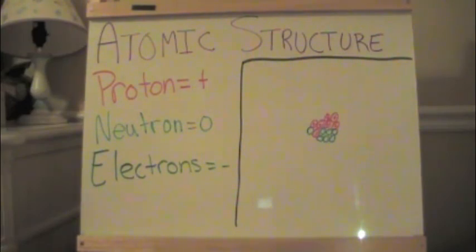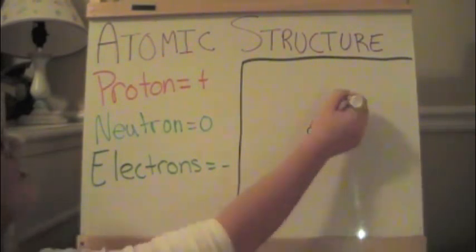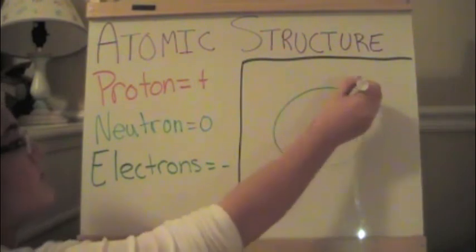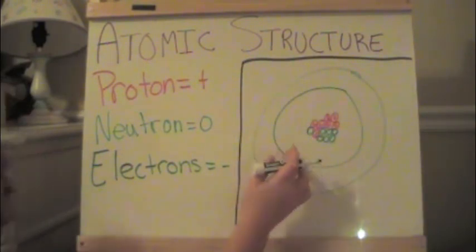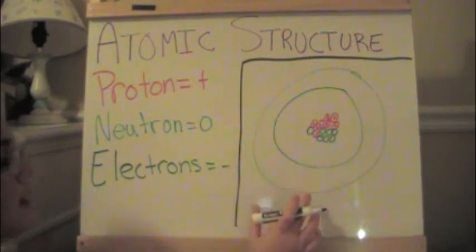Now, these are all in the nucleus, but the electrons orbit the nucleus. So, they would be in shells around the nucleus. Let's say this atom has two shells, which are represented by each level.